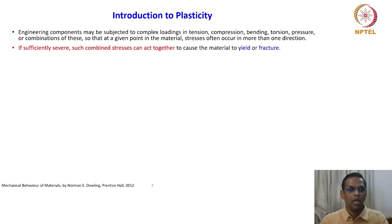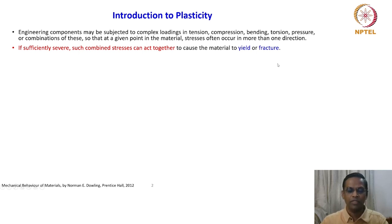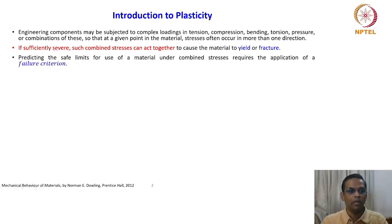In reality, we are seeing similar complex combinations of stresses in day-to-day life. If sufficiently severe, such combined stresses can act together to cause the material to yield or fracture. Such complex types of stresses or loading can lead to either yielding or fracture. We are introducing two words here: yield and fracture. Predicting the safe limits for use of material under combined stresses requires the application of a failure criterion.